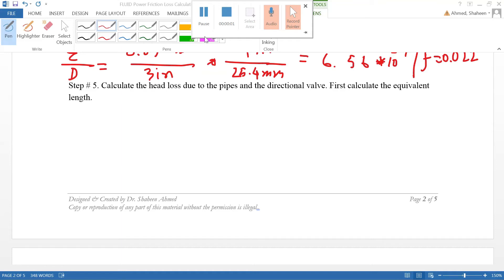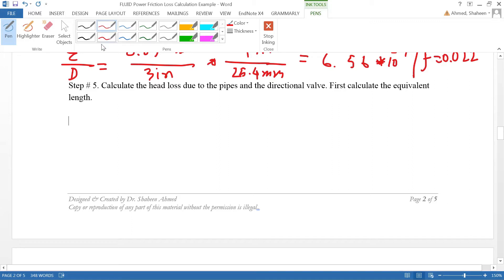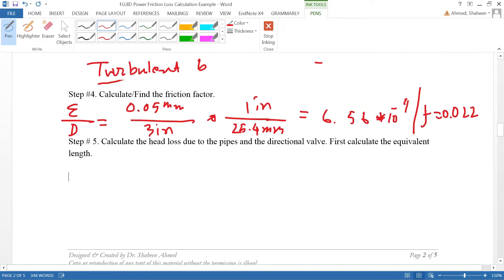Step number five in friction calculation: we are almost close to calculating frictional loss in pipes, valves, and fittings. For straight pipes we have an equation to calculate, however for valves and fittings like elbows we have to use something